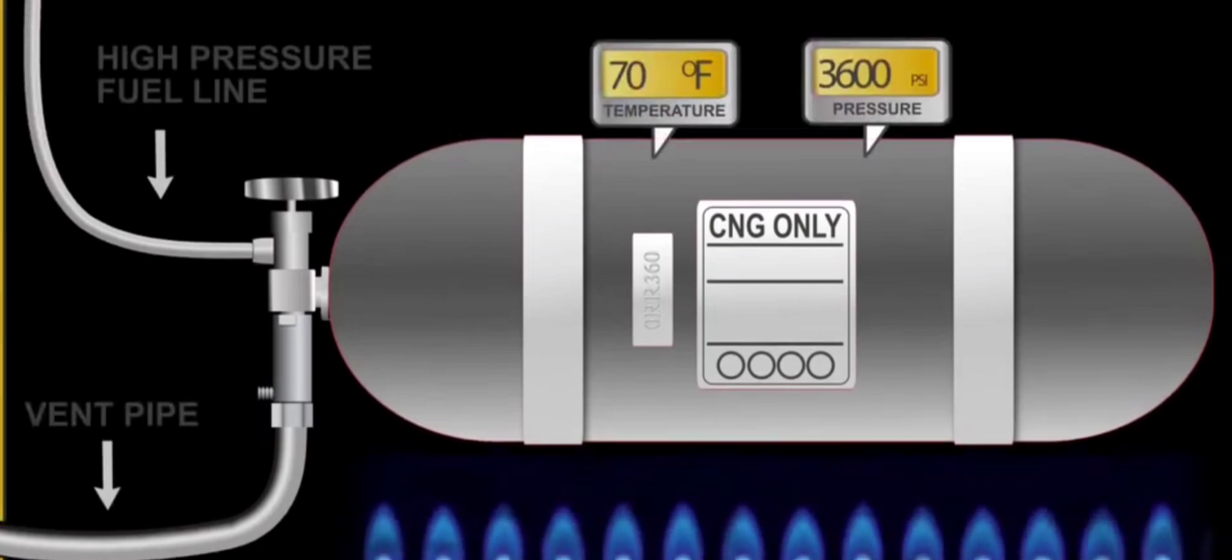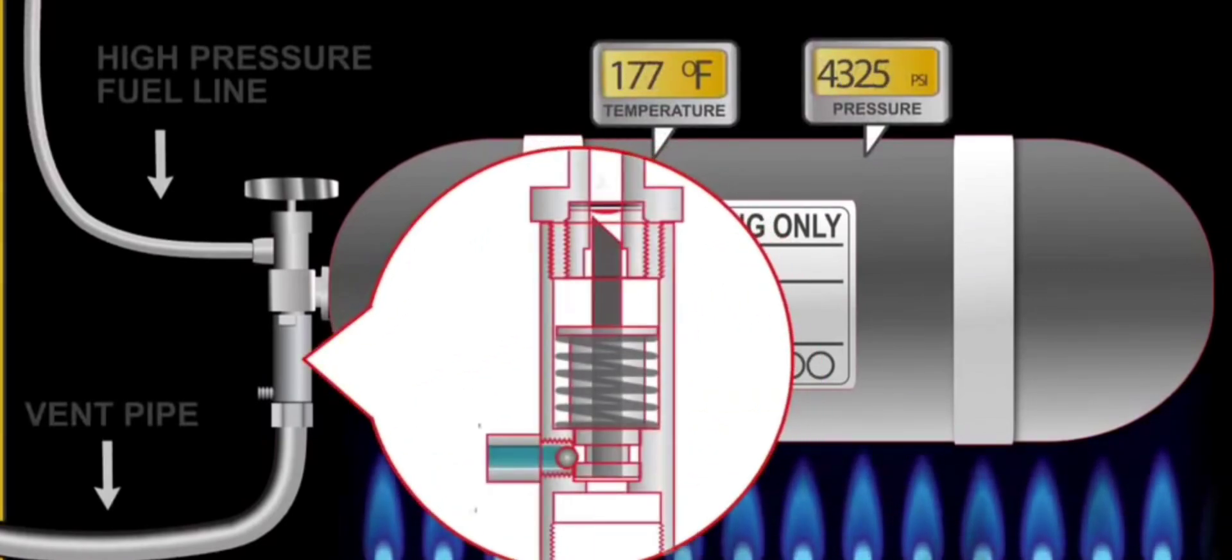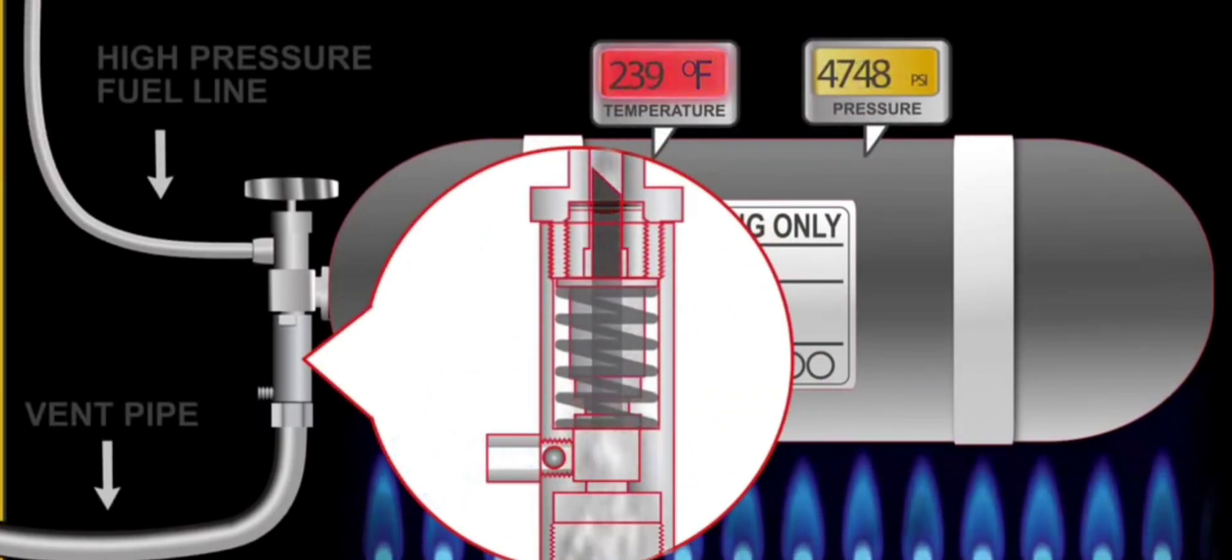Now let's talk about the fuel system. CNG is stored in high-pressure tanks on the vehicle, usually around 3000 to 3600 psi.